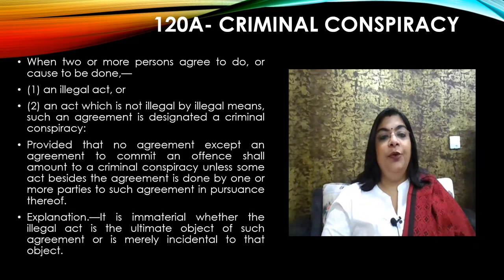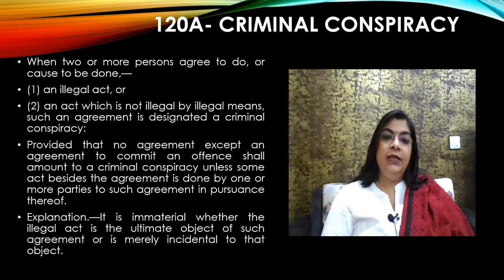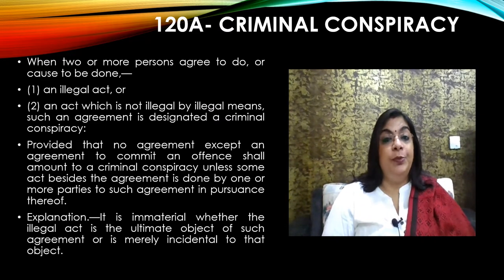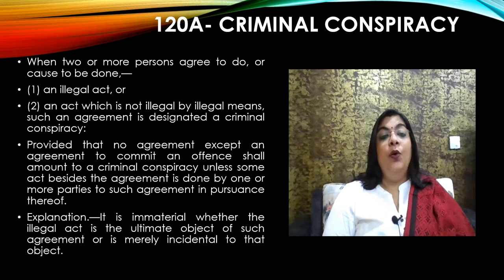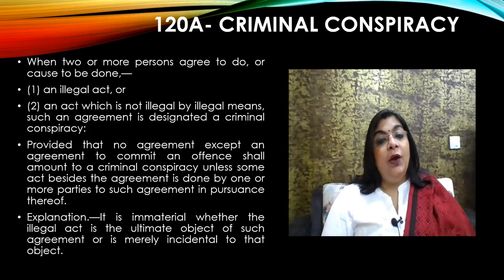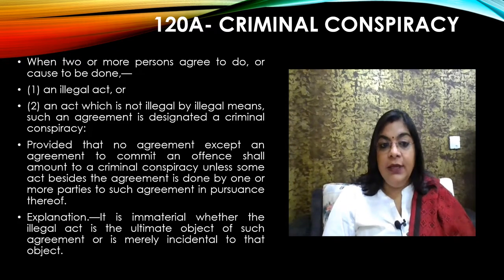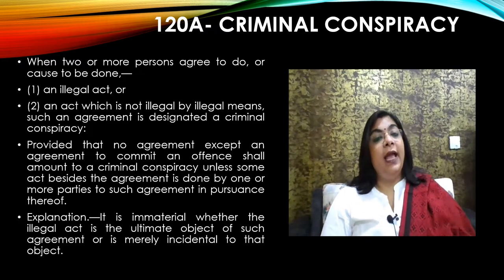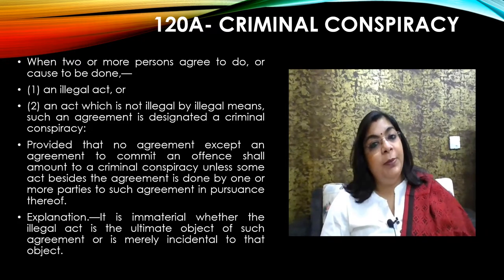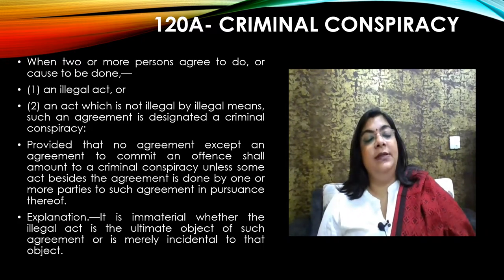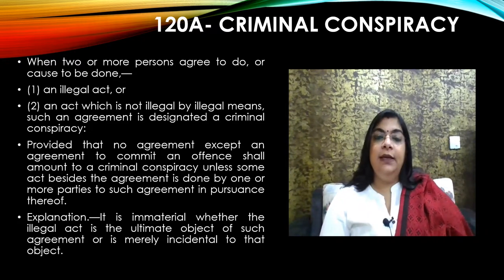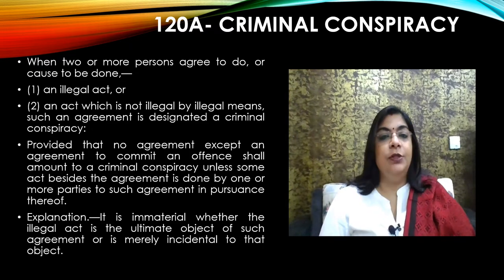Criminal conspiracy has been described under Section 120A of IPC, which says that whenever there are two or more persons who agree to do or cause to be done — first, any illegal act; second, an act which is not illegal but by illegal means — such an act is designated as criminal conspiracy.